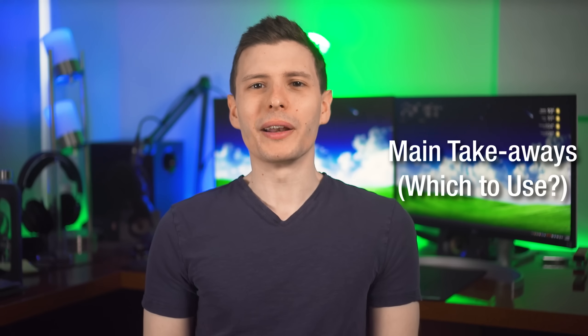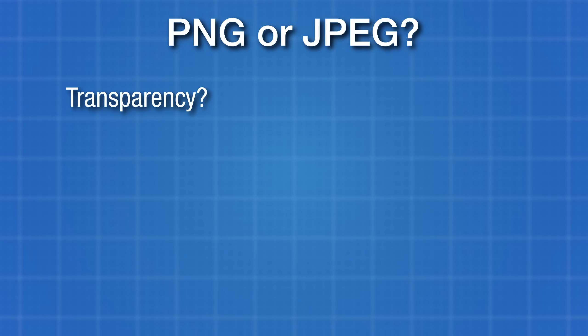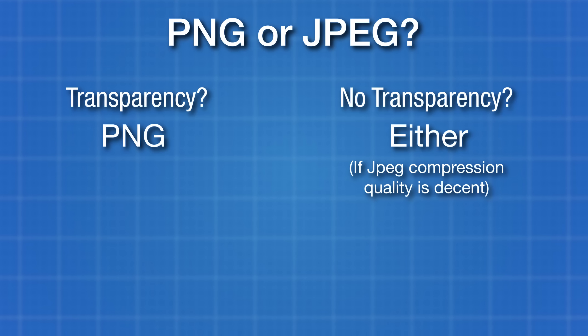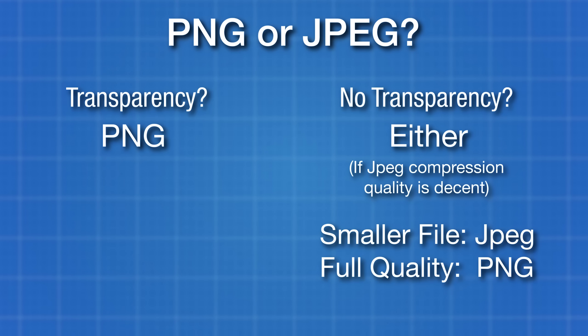So what are the main takeaways? If you need an image with transparency, use PNG — don't use JPEG. If an image has no transparency, you could use either. Assuming higher-quality JPEG compression, you probably won't notice a difference unless you zoom in heavily or start editing, and JPEG will give you a much smaller file. If you want to be sure you're maintaining full image quality, PNG is the way to go — just make sure it's not saving in the indexed or palleted color mode, which some programs may do and would be obvious if you zoomed in.